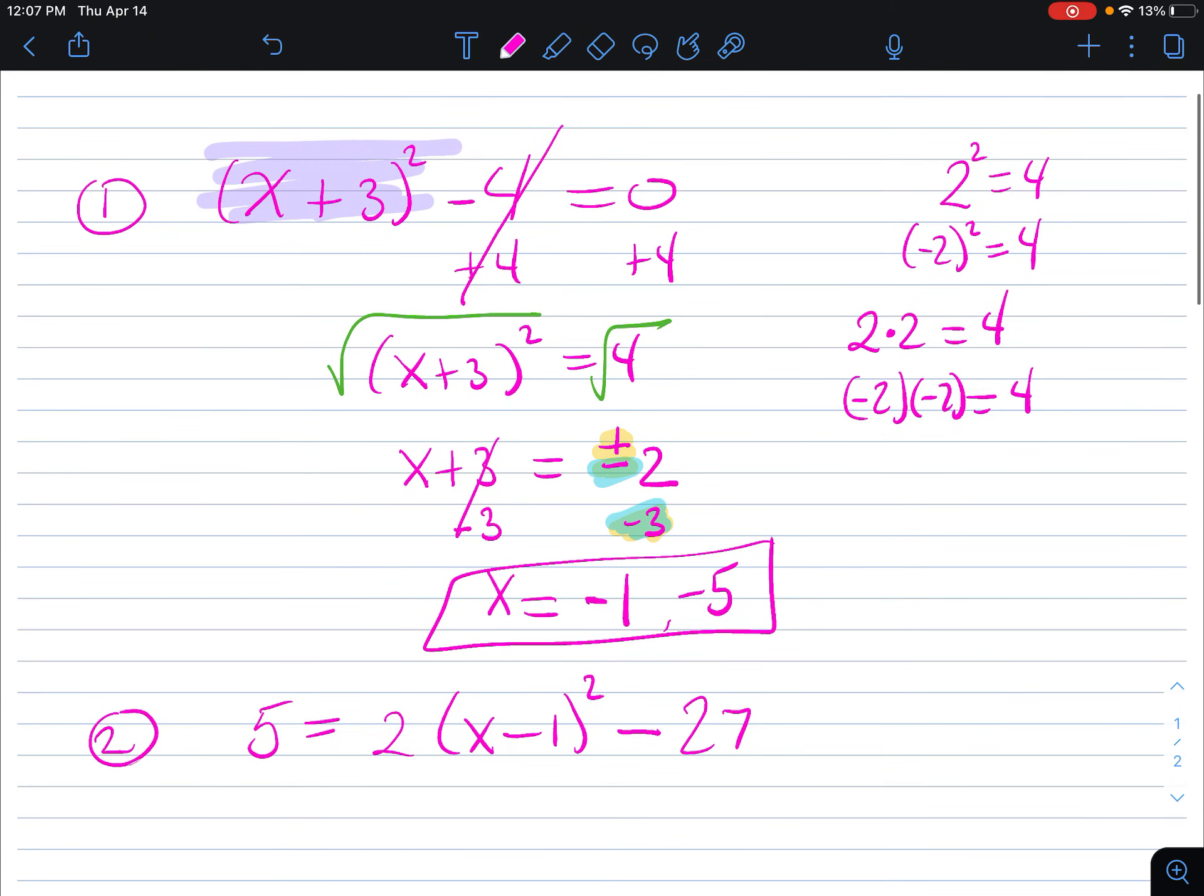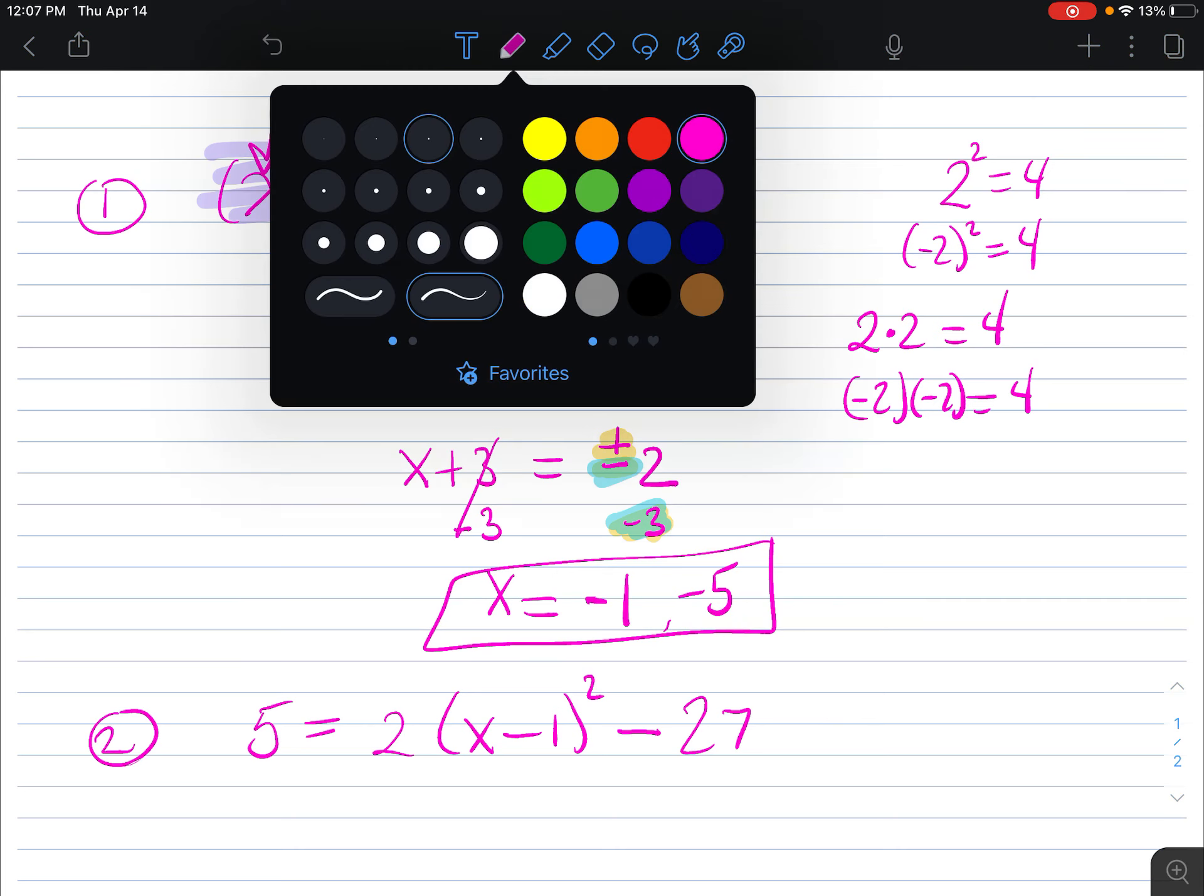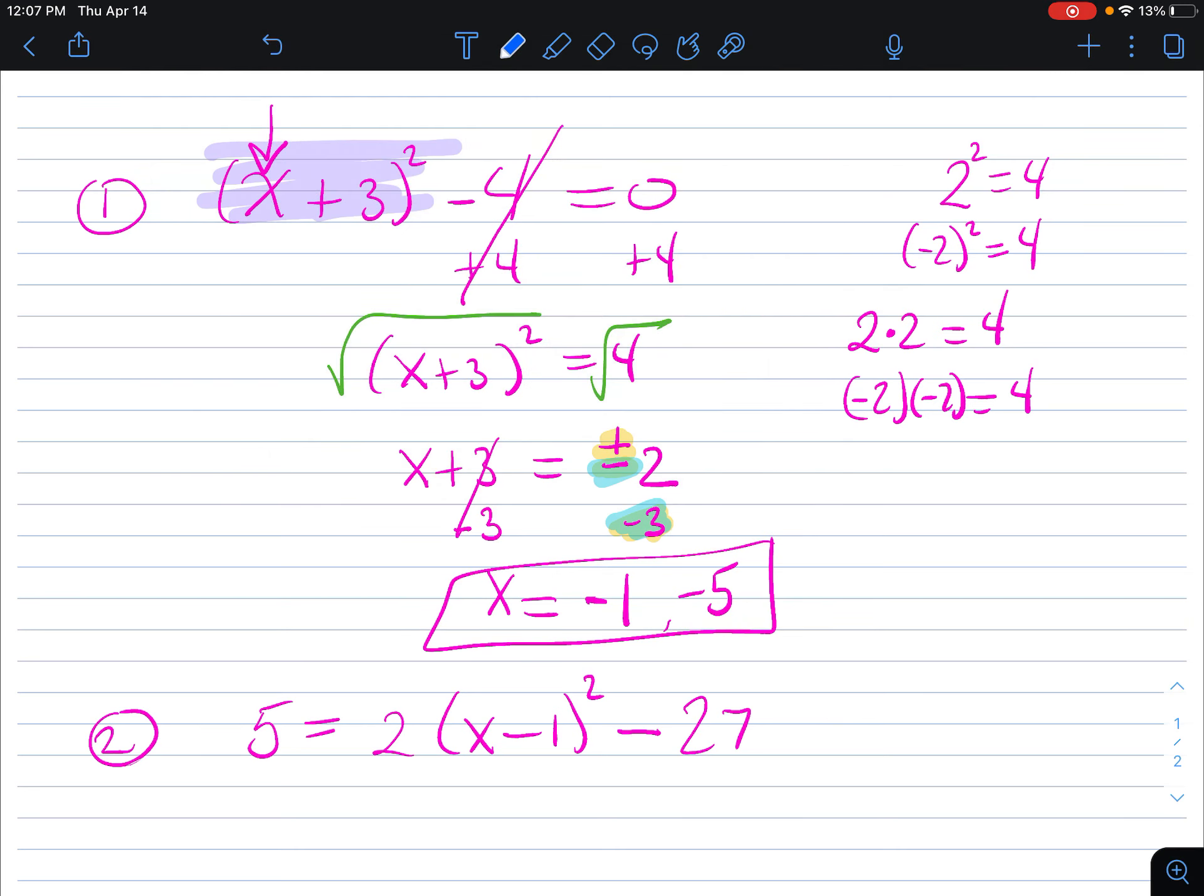Now the way that we check to make sure we have a solution, we plug it wherever we see an x. So if we want to show that check, let's check the negative 1. We would say negative 1 plus 3 squared, take away 4, has to be 0. This is my check.